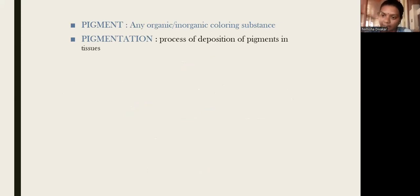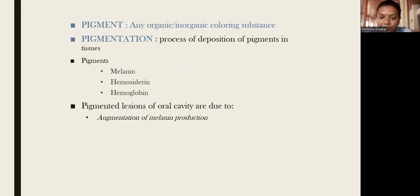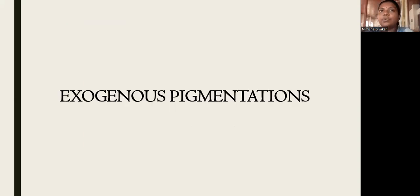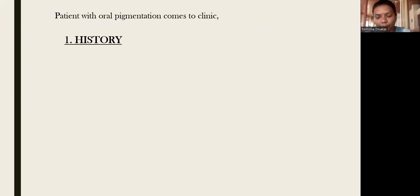A pigment is any organic or inorganic coloring substance, and pigmentation is a process of deposition of pigment in tissue. The main pigments seen in the oral cavity or perioral structures include melanin. When a patient with oral or perioral pigmentation comes to a clinic, we have to first ask for a thorough clinical history in order to get a definitive diagnosis.